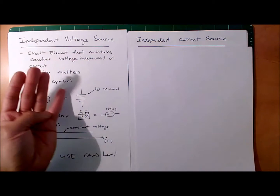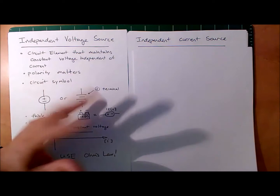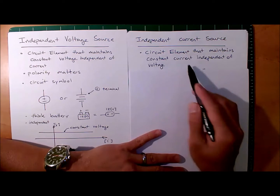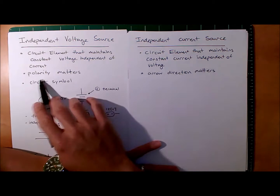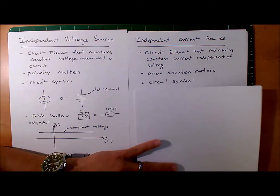An independent current source — and like I said in the previous lecture, you're going to see a lot of these duals: capacitors, inductors, voltage sources, current sources. They're very similar but kind of the opposite. An independent current source is a circuit element that maintains constant current independent of voltage — the dual of the voltage source. And like the voltage source, the arrow direction matters. The circuit symbol for an independent current source is a circle with an arrow instead of a plus and minus.